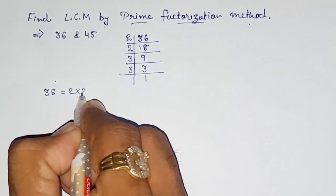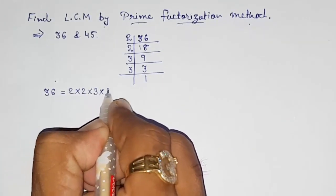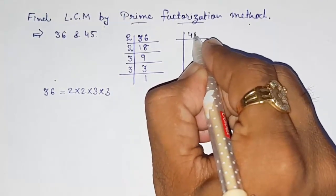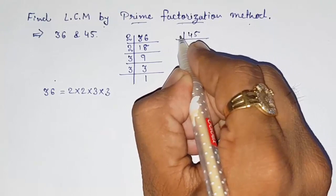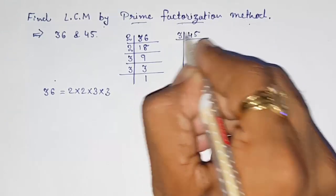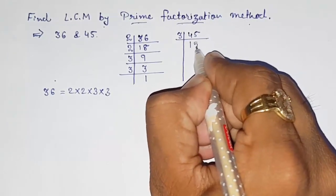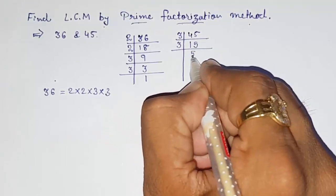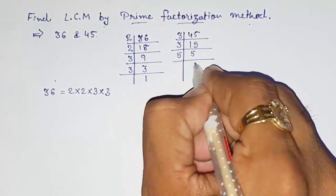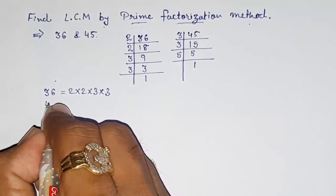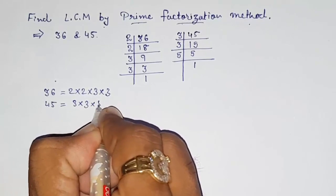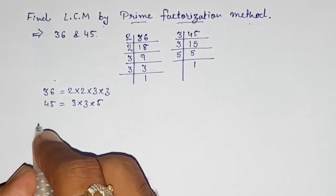Now prime factors of 45. It is not divisible by 2, but it is divisible by 3, so start with 3. 3 times 15 is 45. This is divisible by 3. 3 times 5 is 15, and 5 times 1. The factors of 45 will be 3 into 3 into 5. Now from these factors we have to find out the LCM.